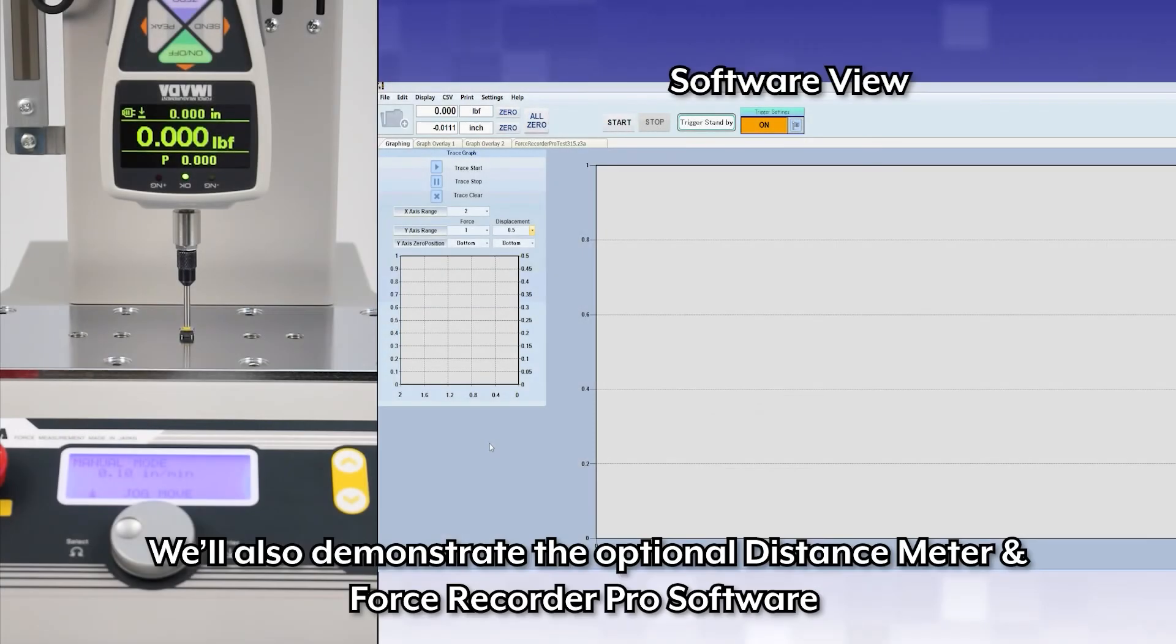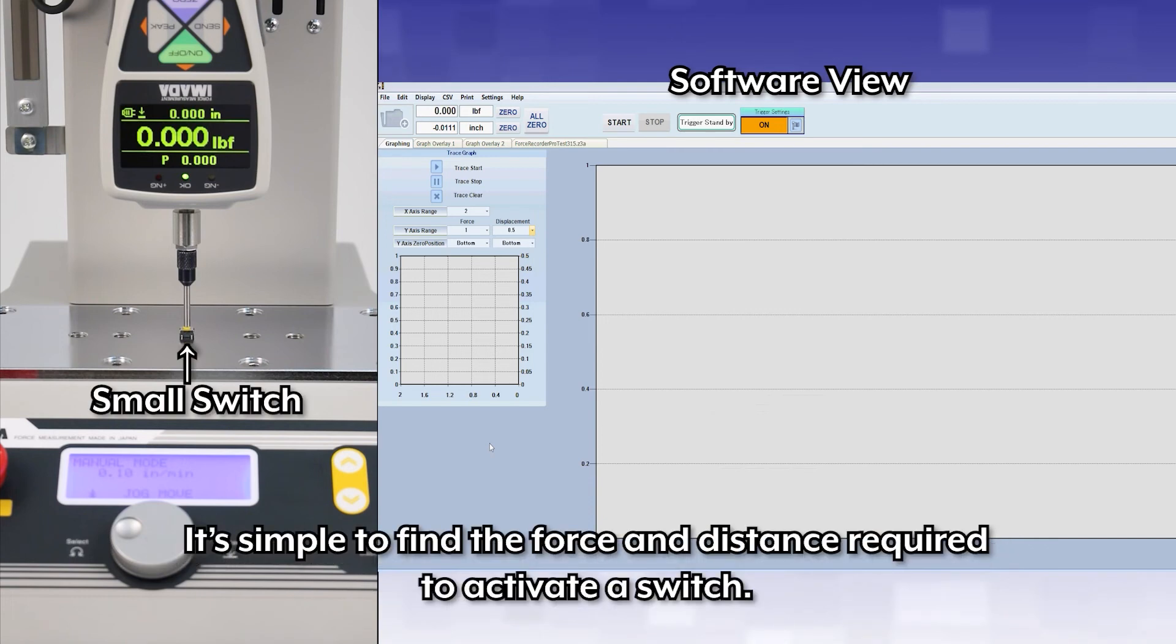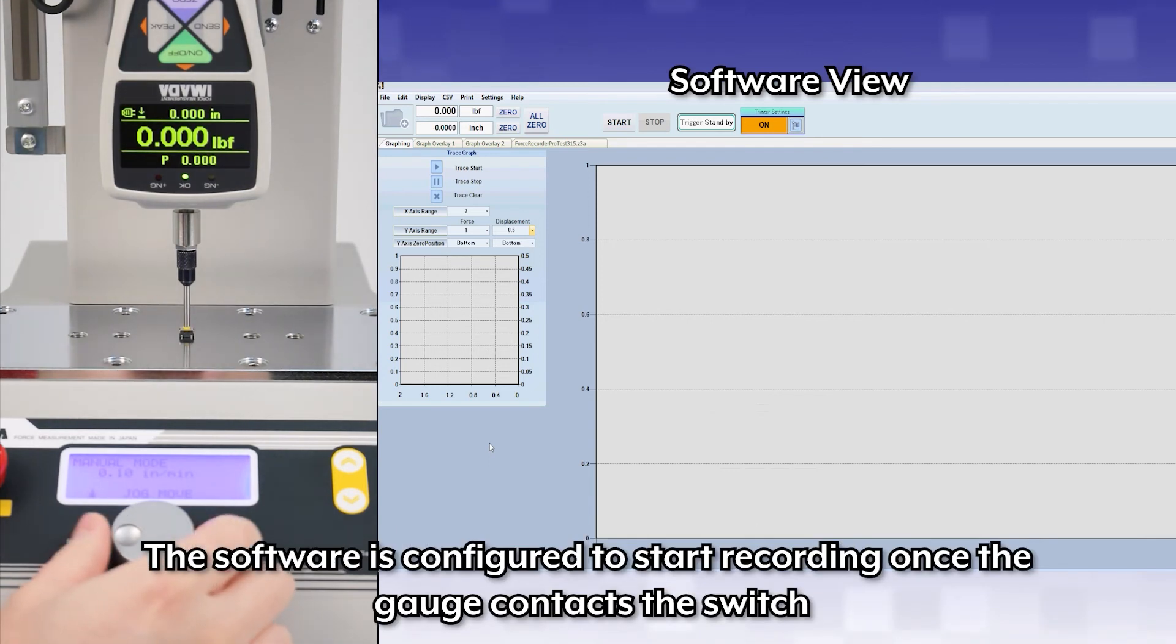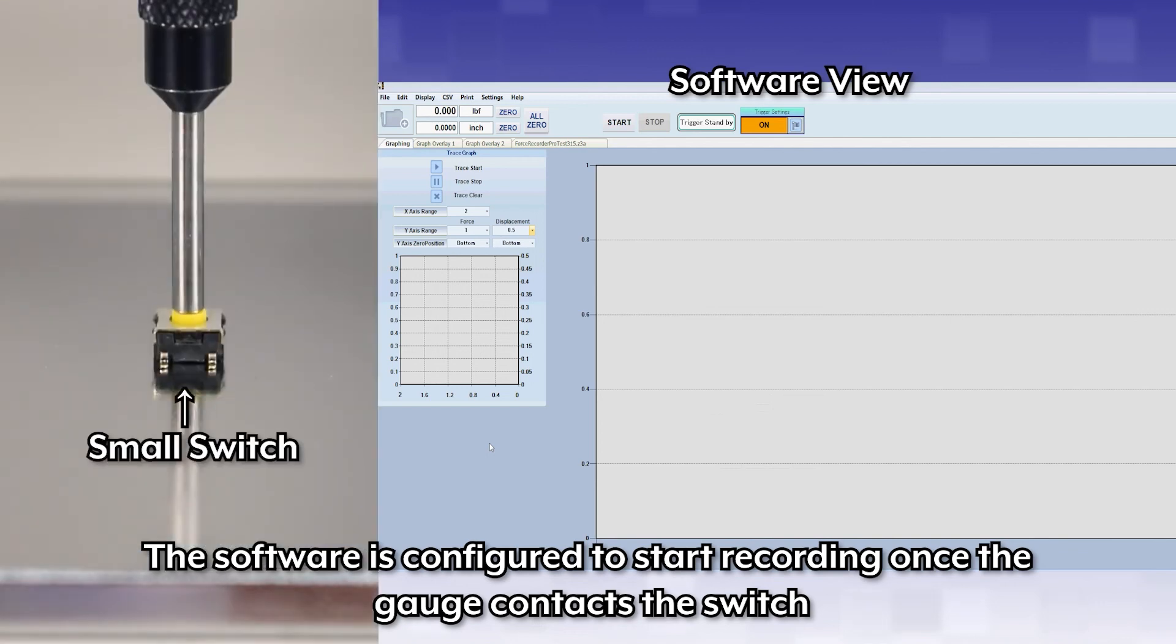We'll also demonstrate the optional distance meter and Force Recorder Pro software. It's simple to find the force and distance required to activate a switch. Software is configured to start recording once the gauge contacts the switch.